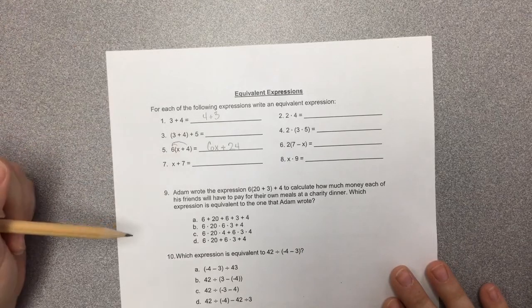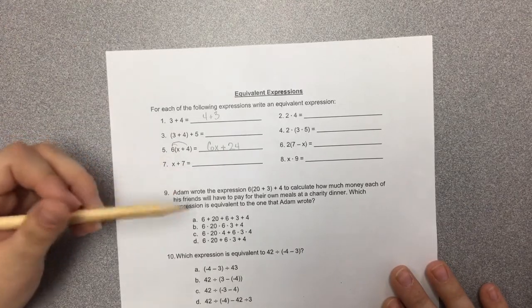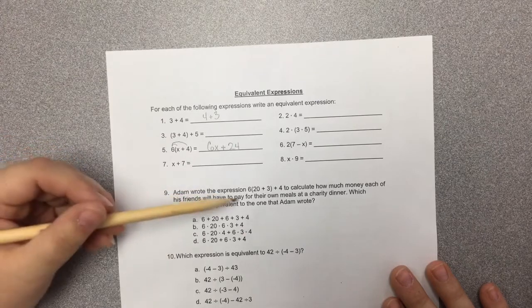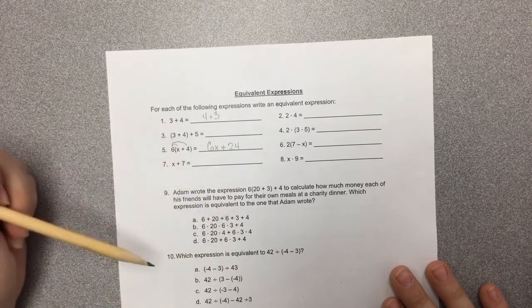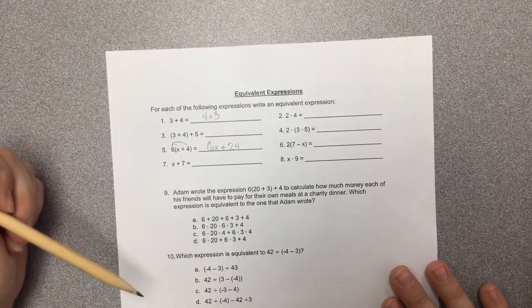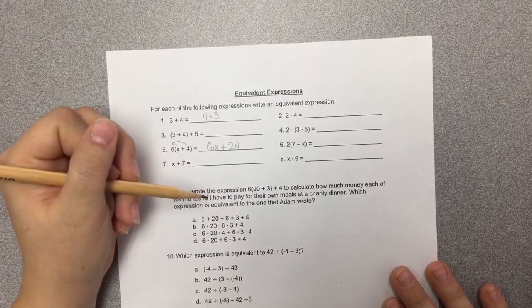Adam wrote the expression 6 multiplied by 20 plus 3 plus 4 to calculate how much money each of his friends will have to pay for their own meals at a charity dinner. Which expression is equivalent to the one that Adam wrote? Alright, so we've got 6 times 20 plus 3 plus 4.